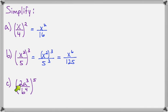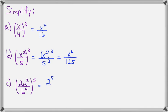On our last example, we have 2a to the third over b to the fourth, all raised to the fifth power. That means we have to apply the fifth power to everything in the parentheses: 2 to the fifth, a to the third to the fifth, and b to the fourth to the fifth.